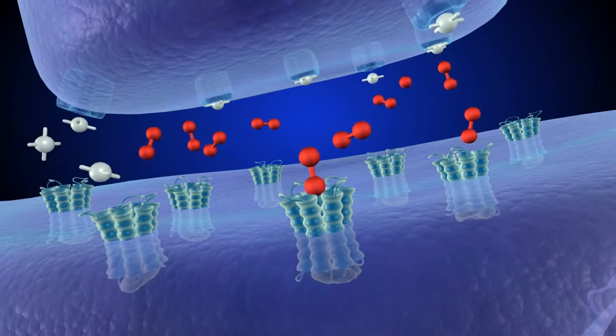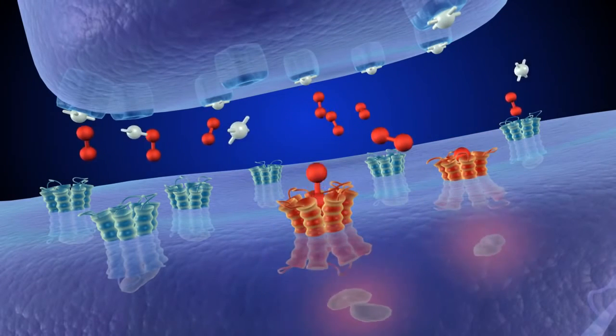When someone first uses cocaine, the drug quickly enters the brain, where it blocks the transporters on the presynaptic cell. Since dopamine cannot re-enter the presynaptic cell, it begins to accumulate in the synapse, where it can reach abnormally high levels and remain there much longer than usual. The postsynaptic cell becomes hyperactivated, which produces a feeling of euphoria. This creates an incredibly powerful association between cocaine and pleasure, making a person want to repeat the experience of taking the drug.